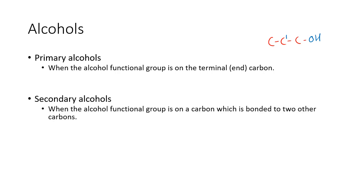A secondary alcohol is when the alcohol functional group is on a carbon which is bonded to two other carbons, which generally means it's in the middle of the chain. Make sure that when you're drawing your lines, they've got to go to the atom that it is actually bonding to — in this case the oxygen. If you draw the bond showing it attached to the hydrogen instead of the oxygen, that would be incorrect.